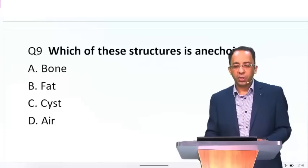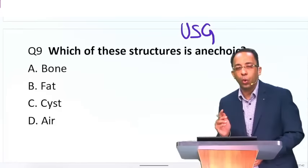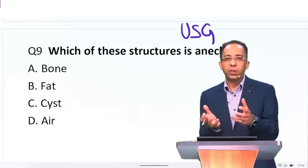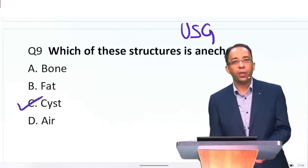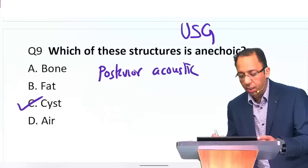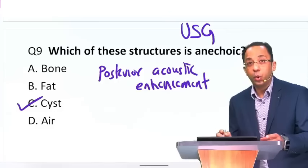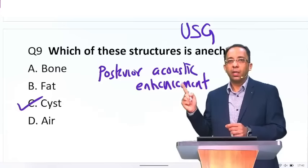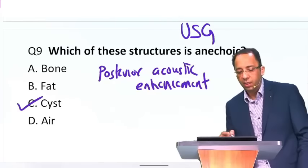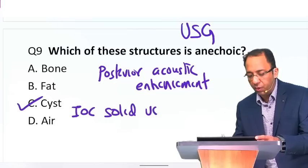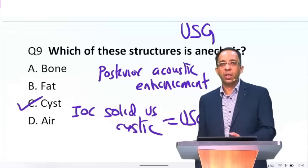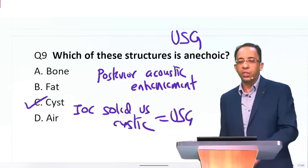One question based on ultrasound: which of the following structures is anechoic? Any structure full of water will appear anechoic on ultrasound. A thin-walled benign structure full of water is a cyst — so a cyst will be anechoic. Distal to the cyst you will see posterior acoustic enhancement. Don't confuse this with shadow — distal to stone, bone, and air you will see acoustic shadow. Investigation of choice for determining solid versus cystic is always ultrasound. Whenever you have a lump and want to characterize it as solid or cystic, do an ultrasound.